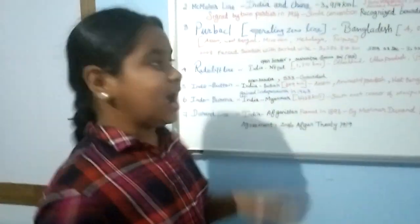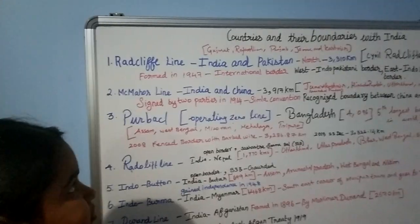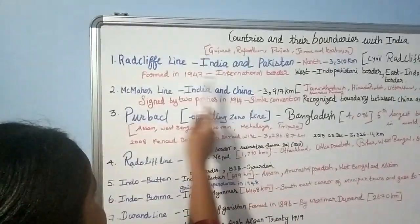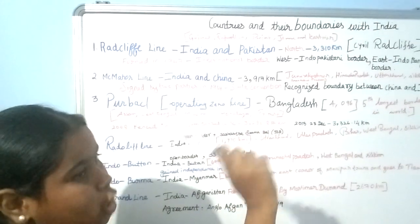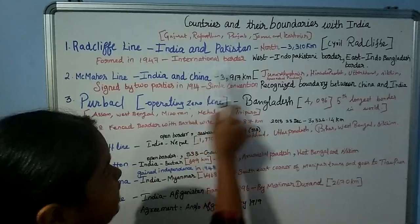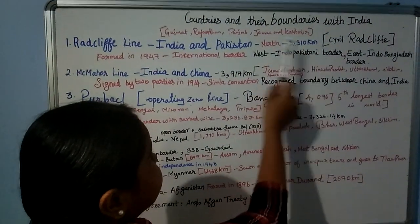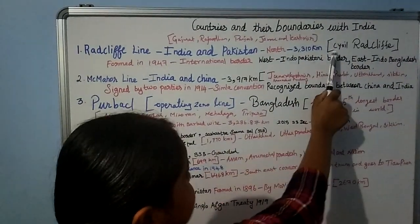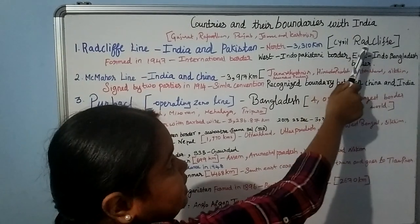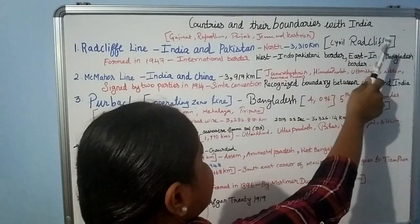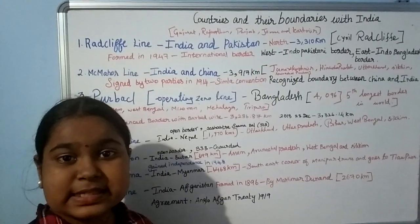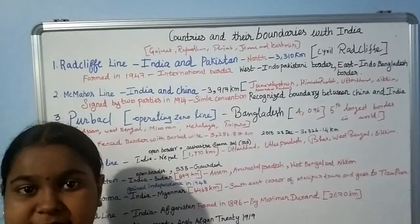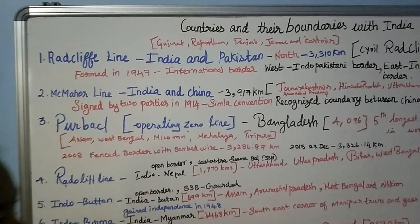First let's start with the Radcliffe Line. This is the border shared between India and Pakistan, located in the north of India, which spans 3,310 km. It is named after Cyril Radcliffe, the person who designed this line to separate India from Pakistan.